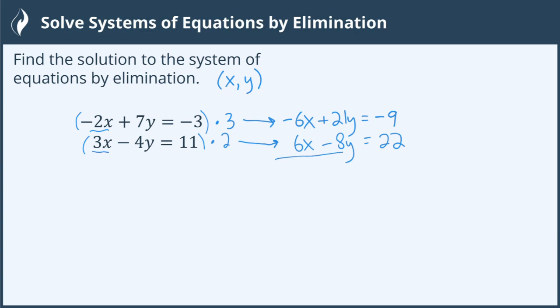Now when I add those together, the x's drop out because negative 6x plus 6x is 0x. 21y plus a negative 8y is going to give me 13y. And negative 9 plus 22 will give me 13. So now I can solve this for y by dividing by 13. I get y equals 1.